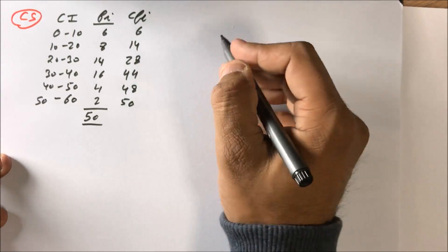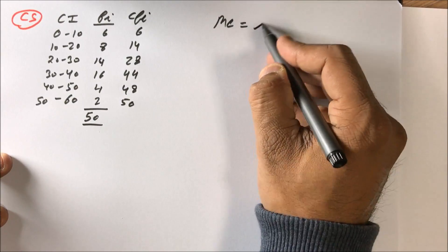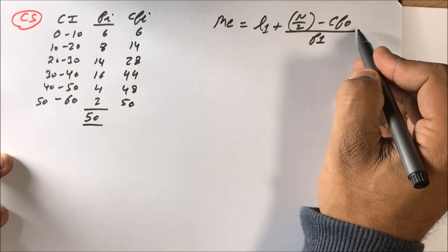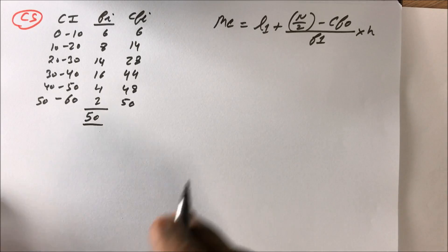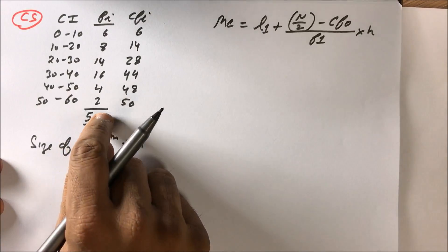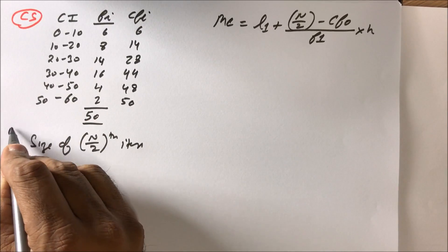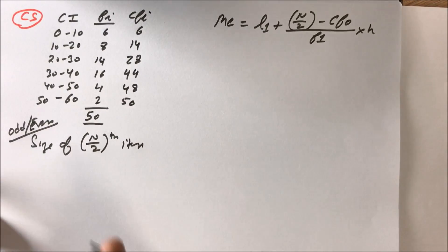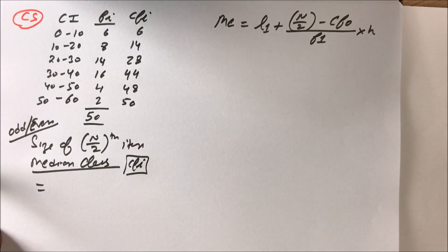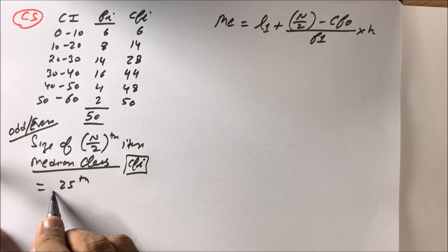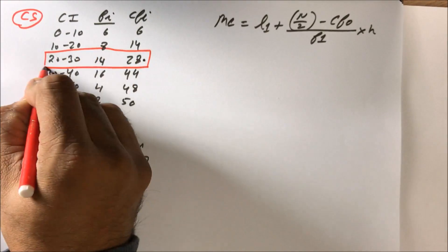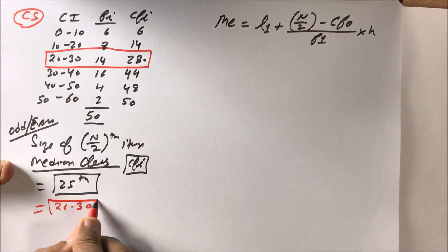The formula for median in continuous series is: L1 + [(n/2 − CF0) / f1] × h. We always check n/2 = 25th item. Looking at the CF, 25 falls in the interval where CF first exceeds 25, which is 28 — so the median class is 20–30.